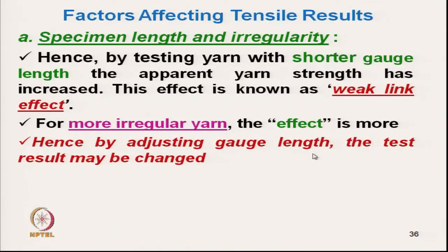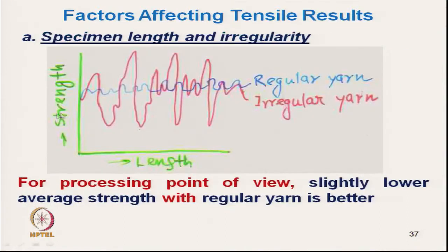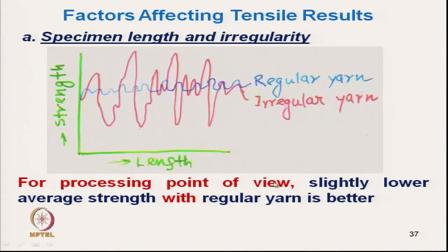By adjusting the gauge length, the test result can actually be varied — you can change the test result of a particular yarn by changing the gauge length. It is therefore important to specify the standard gauge length. The more irregular the yarn (shown in red), the more weak points there will be. The almost-regular yarn (shown in blue), although its mean strength may be lower, will show a higher breaking strength than the irregular yarn. For processing, slightly lower average strength is acceptable if yarn regularity is better.